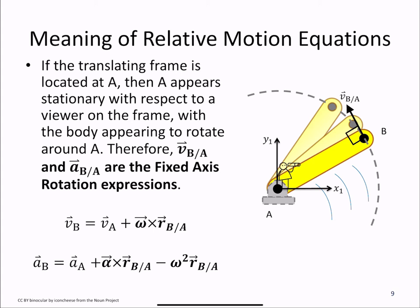Therefore, our relative terms VB with respect to A and AB with respect to A are simply the fixed axis rotation expressions that we've already seen. We can see that for velocity, that's omega cross RB with respect to A.